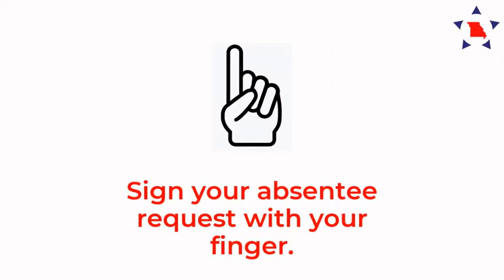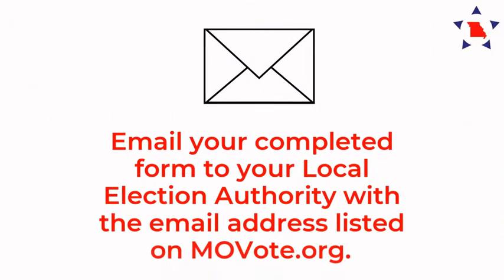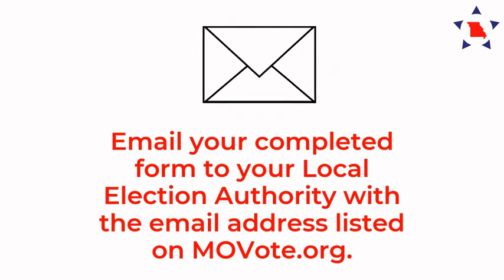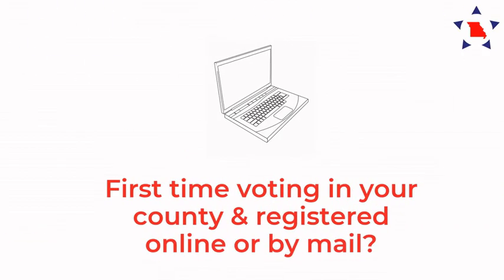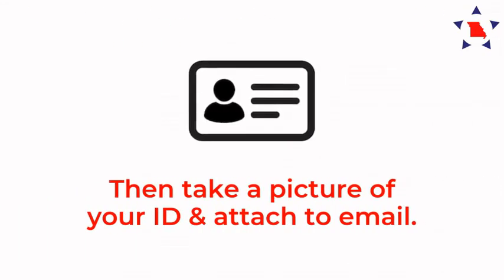Sign your absentee request with your finger. Email your completed form to your local election authority with the email address listed on movote.org. If this is your first time voting in your county and you registered online or by mail, then take a picture of your ID and attach it to the email.